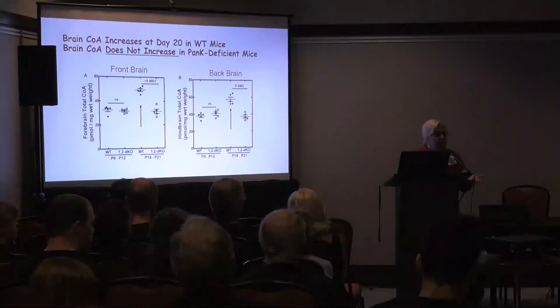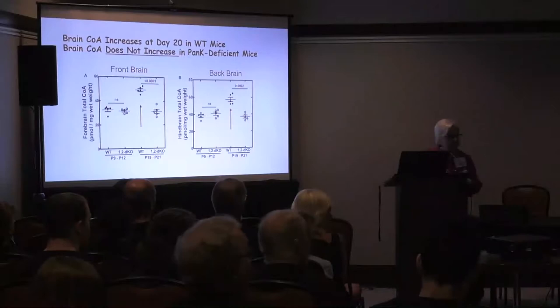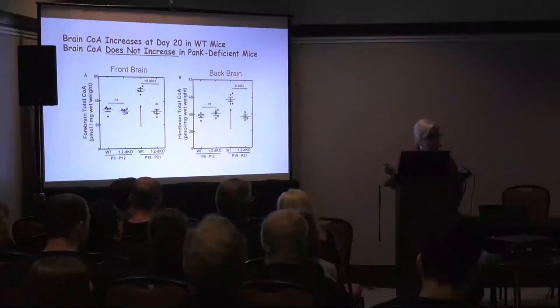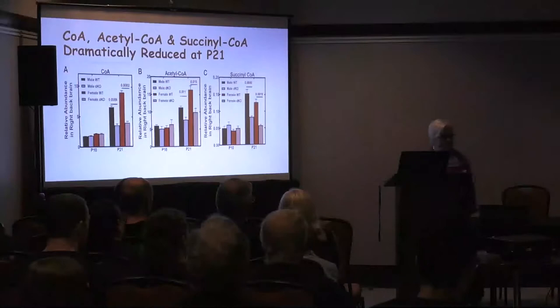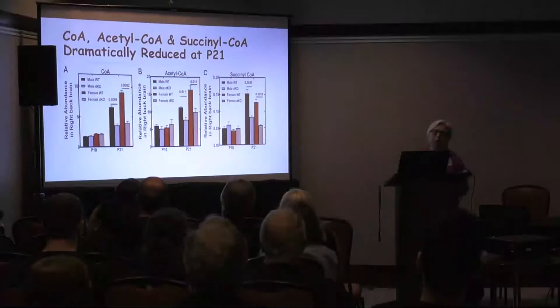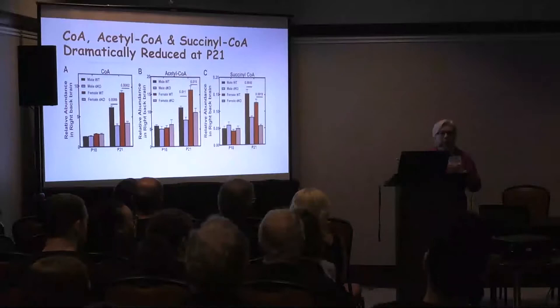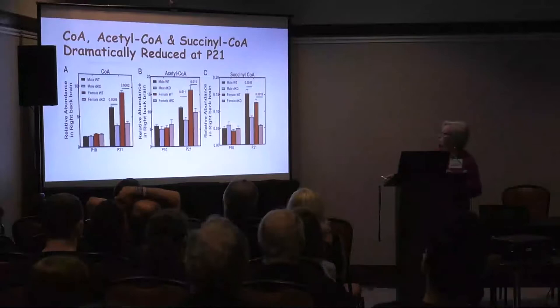We've reduced the CoA in the brain later in development. It's not only total CoA that's reduced — acetyl-CoA is reduced in both males and females. We've separated them out in this case. As far as total CoA is concerned, there's really no difference, but there is a difference between males and females when you look at the CoA derivatives. Succinyl-CoA is really reduced — more than 50%.